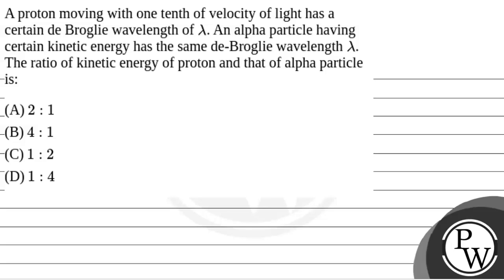Hello Watcho, let's read the question. A proton moving with one tenth of velocity of light has a certain de Broglie wavelength of lambda. An alpha particle having certain kinetic energy has the same de Broglie wavelength lambda. The ratio of kinetic energy of proton and that of alpha particle is?